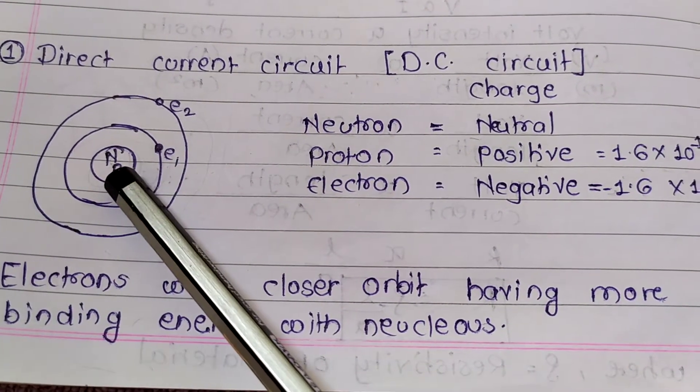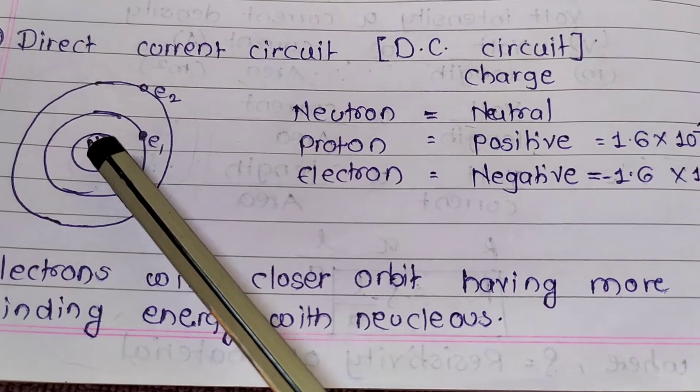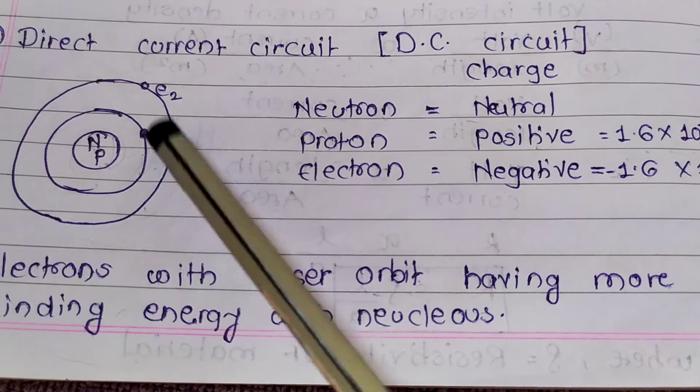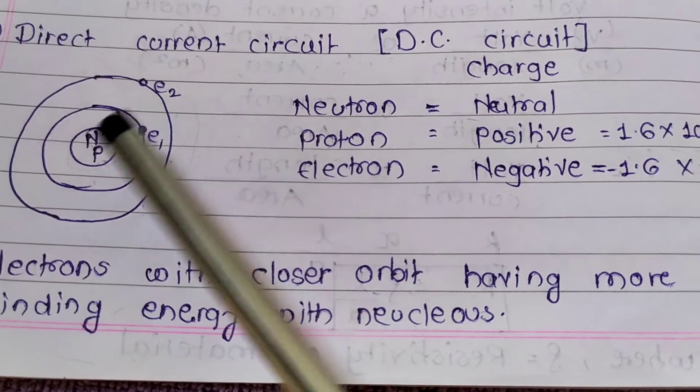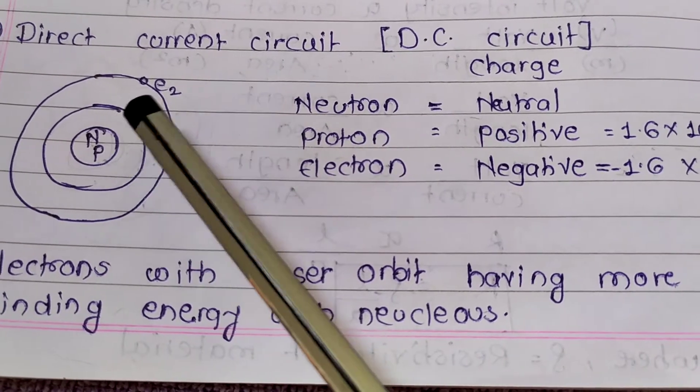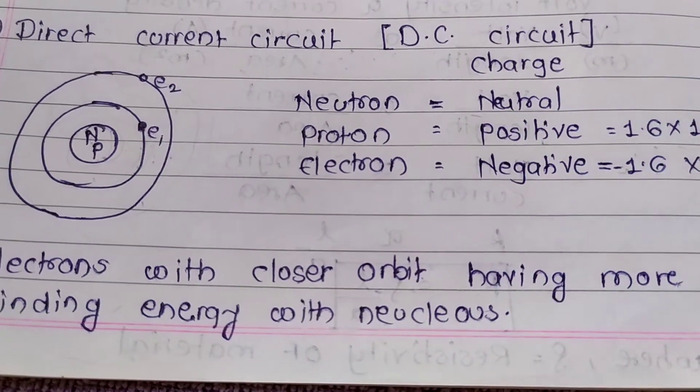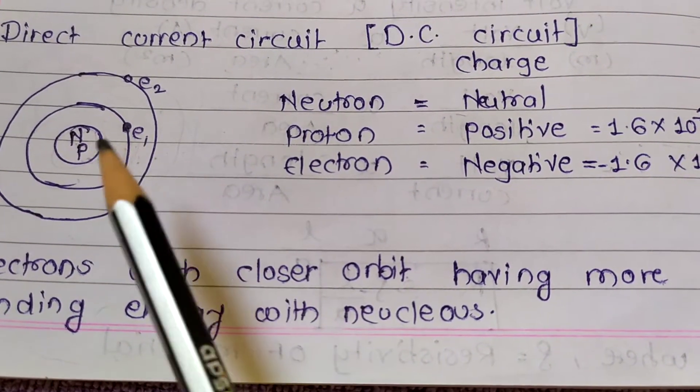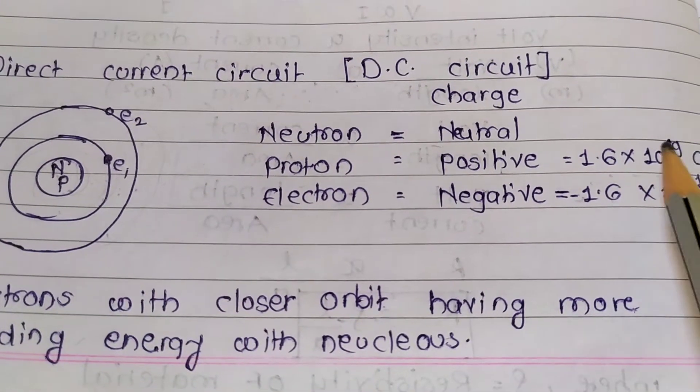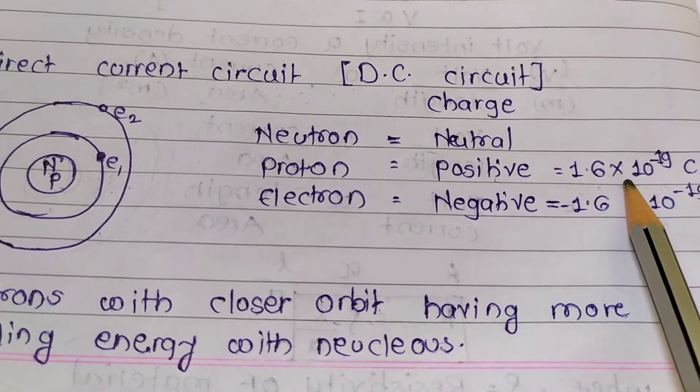This is the nucleus. These are the orbits. We all know proton and neutron in nucleus and electrons in orbits. Protons have positive charge, neutrons neutral charge, electrons negative charge. Protons and electrons have charge value 1.6 × 10^-19 Coulomb, but electrons with negative sign and protons with positive sign.